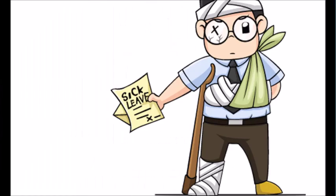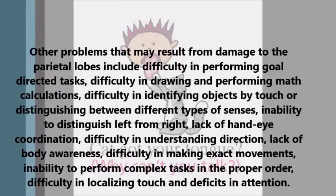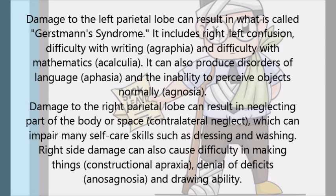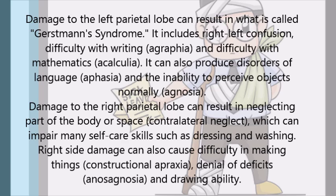Damage to the left parietal lobe can result in what is called Gerstmann syndrome. It includes right-left confusion, difficulty with writing, and difficulty with mathematics. It can also produce disorders of language and inability to perceive objects normally.